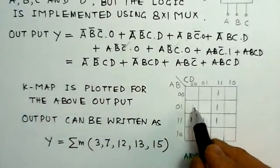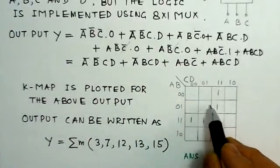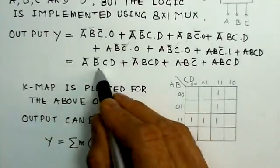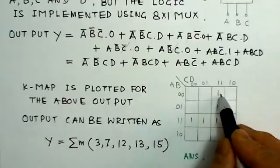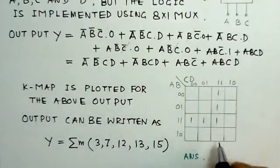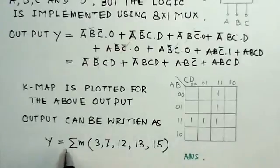Corresponding to this A bar B bar C D, you can find this is zero zero C D, zero zero one one. So this will give me this input here. This term will give me this one. Similarly, you can plot all the other ones on this Karnaugh map. And you can then determine the output here.